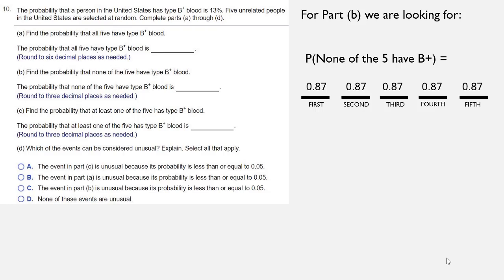We multiply those together, and we get 0.4984209207. Rounded to three decimal places is 0.498. So this is your answer to part B.